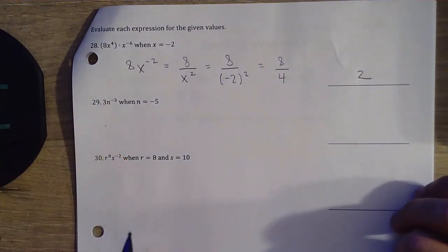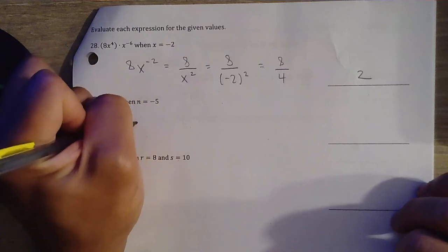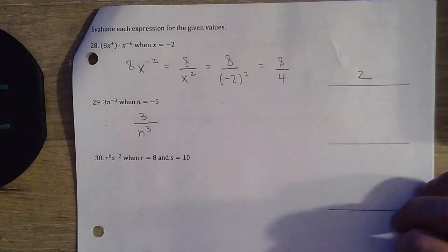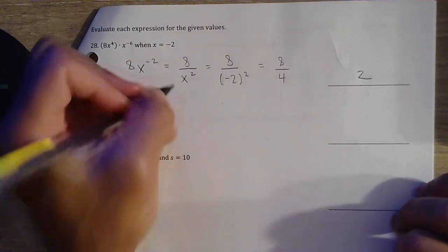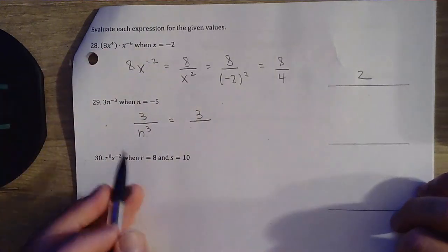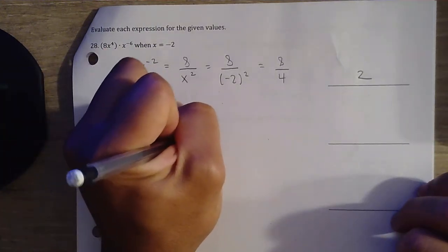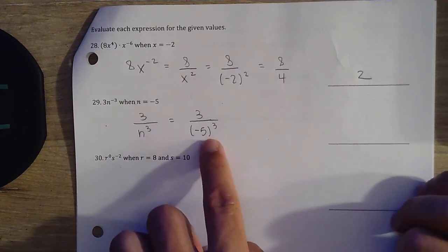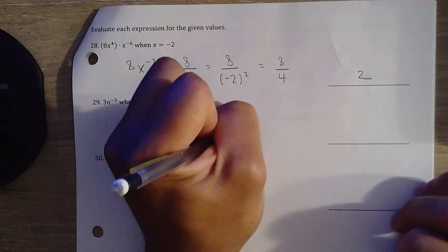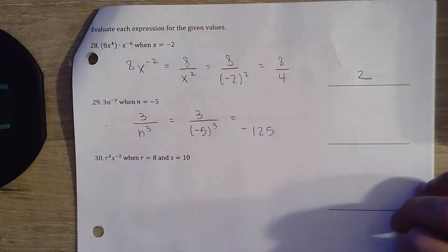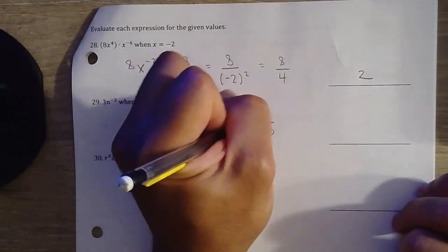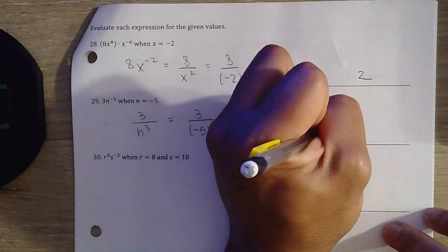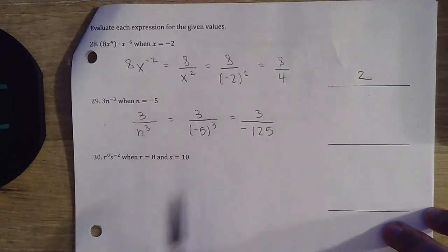Question 29. We move the negative exponent down, so we'll just make a fraction: 3 stays in our numerator, we bring it down into the 3rd power. Now we go ahead and plug it in — that's going to be equal to 3 over negative 5 to the 3rd power. Negative 5 to the 3rd power is negative 125. Final answer: 3 over negative 125.